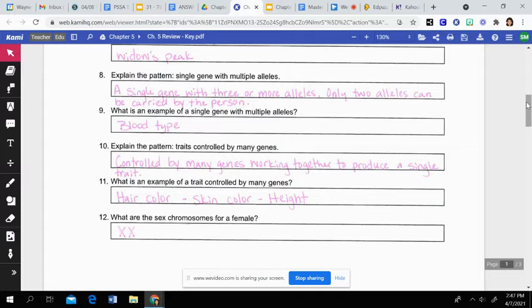Then when there's a trait that's controlled by many genes, this is just when many genes are working together as a group, and then they produce a single trait. And examples of this are hair color, skin color, and height. We have so many different variations of those because there's many genes that kind of all work together to produce those differences.